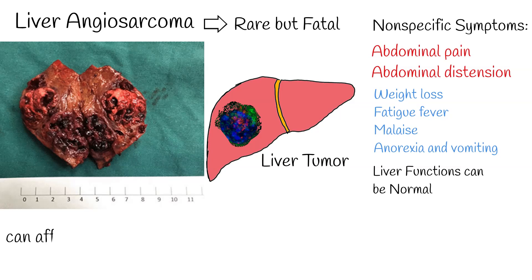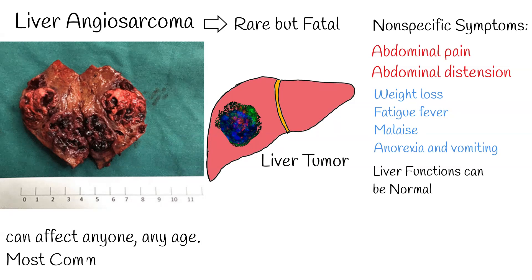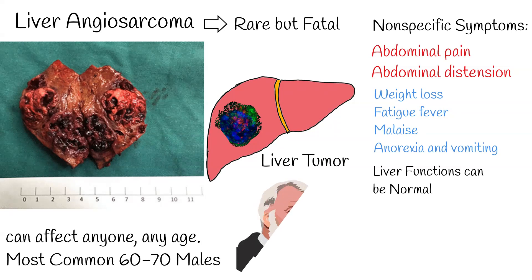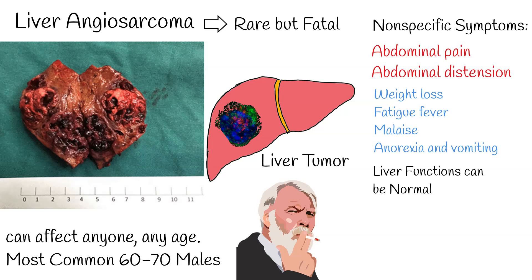Liver angiosarcoma is a very rare disease, but it can affect anyone, including children. However, it most commonly affects males aged 60 to 70 years.